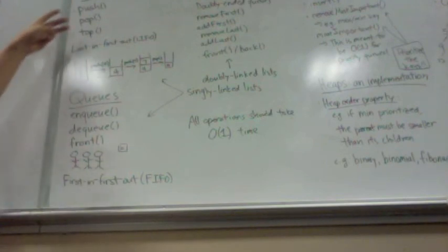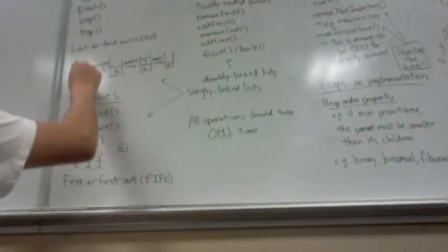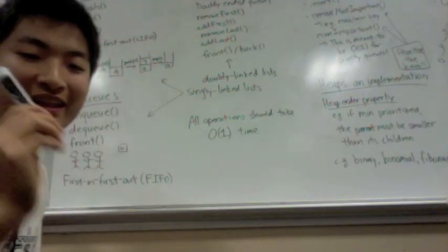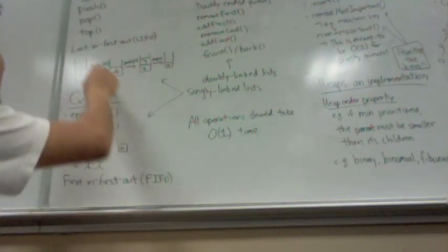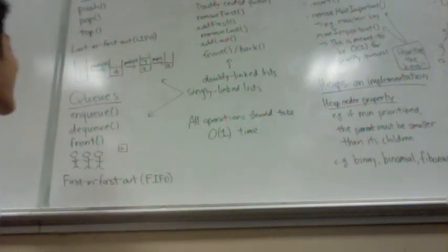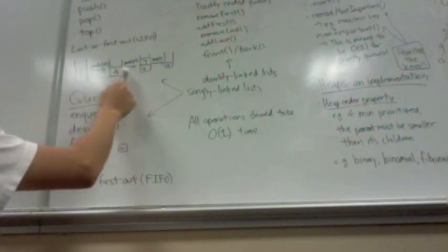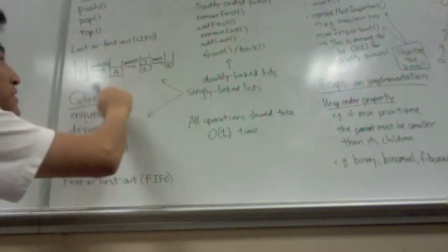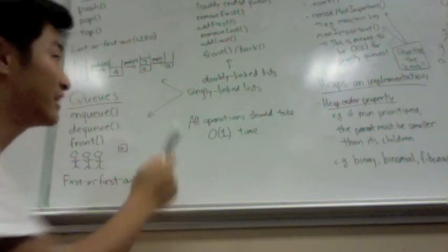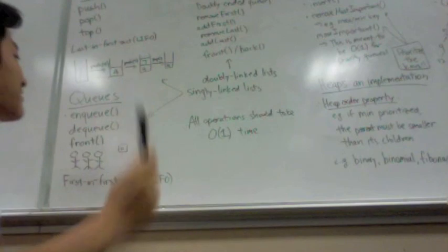And so you have three operations: push, pop, and top. Push is you push any item into the stack. Pop is you pop the last item, which is the one at the very top from the stack, and top is checking to see what that one is. For instance, if I have an empty stack, I push a 4 and a 7. The 7 was pushed last, so it's on top of the 4, and so when I pop from this stack, I pop that top element, which is the 7.